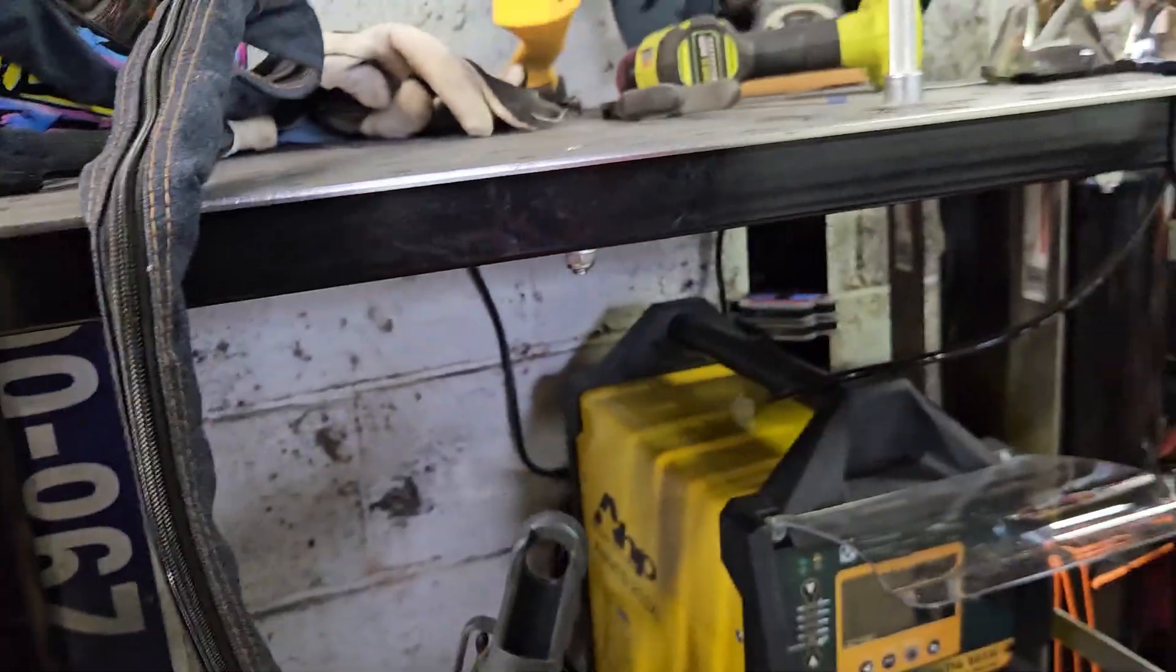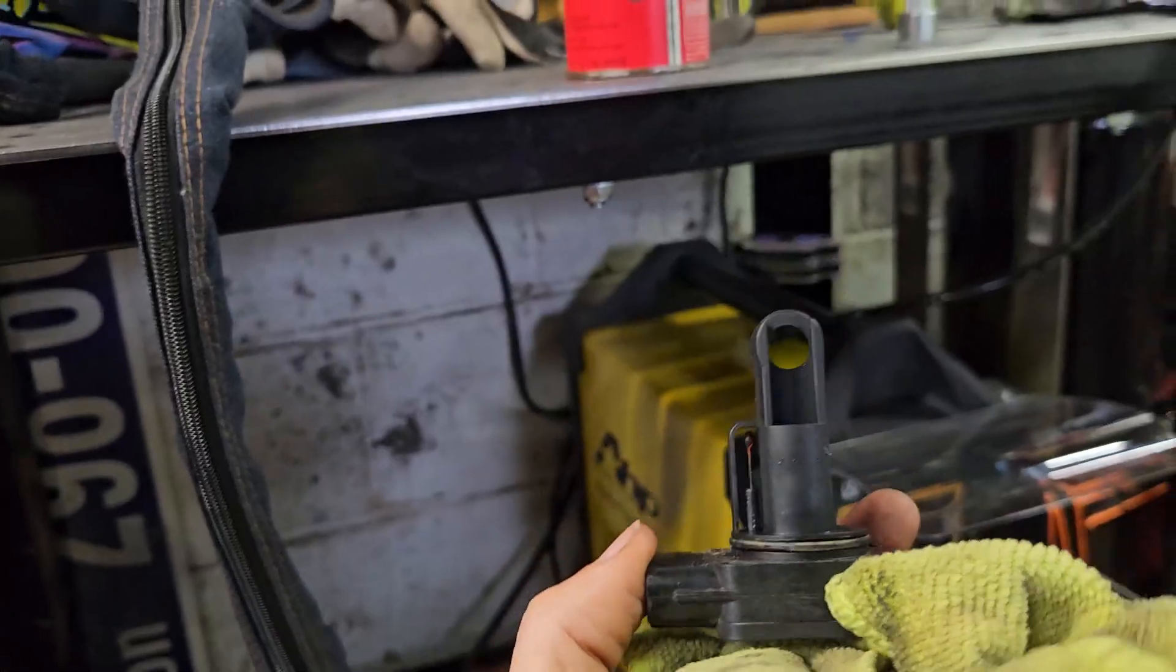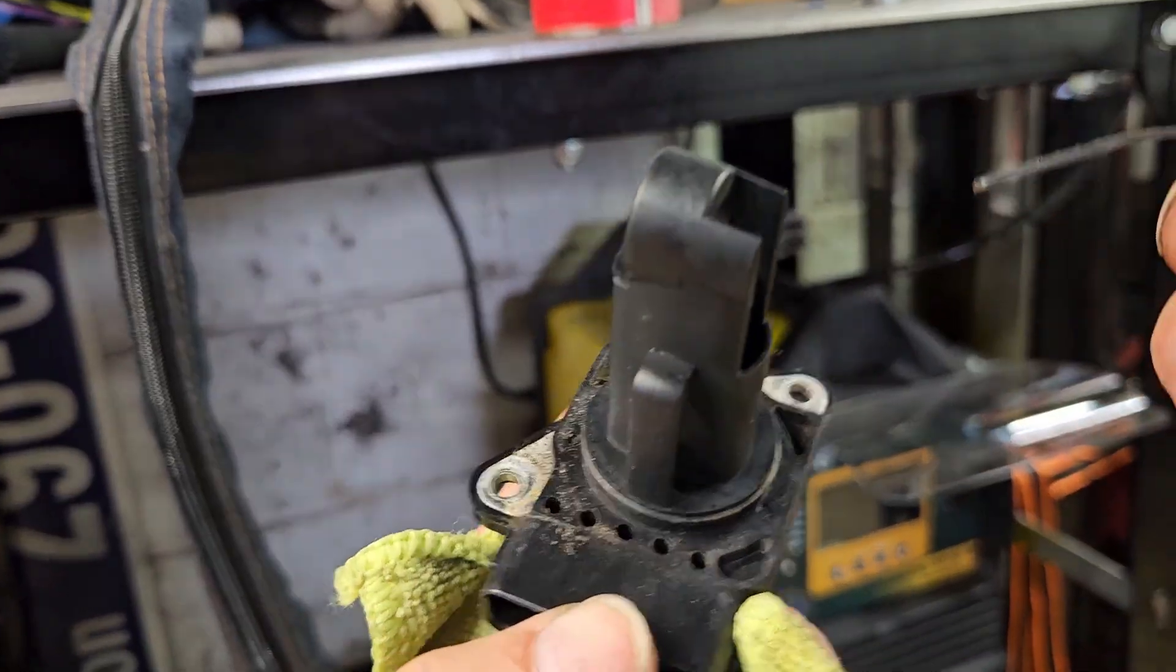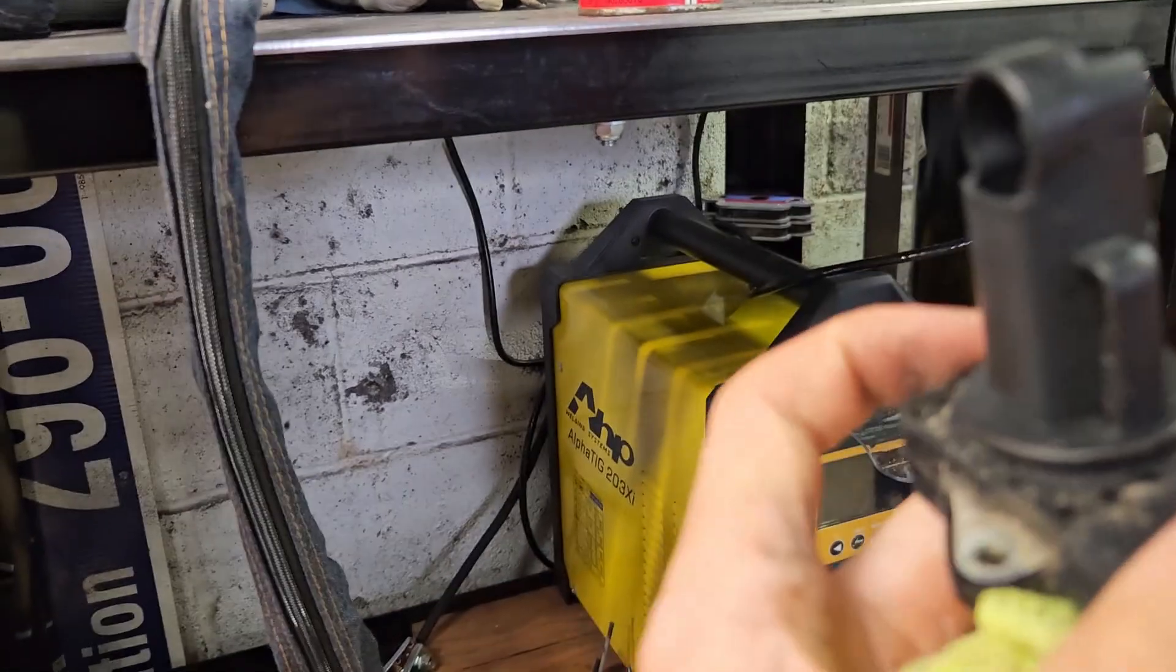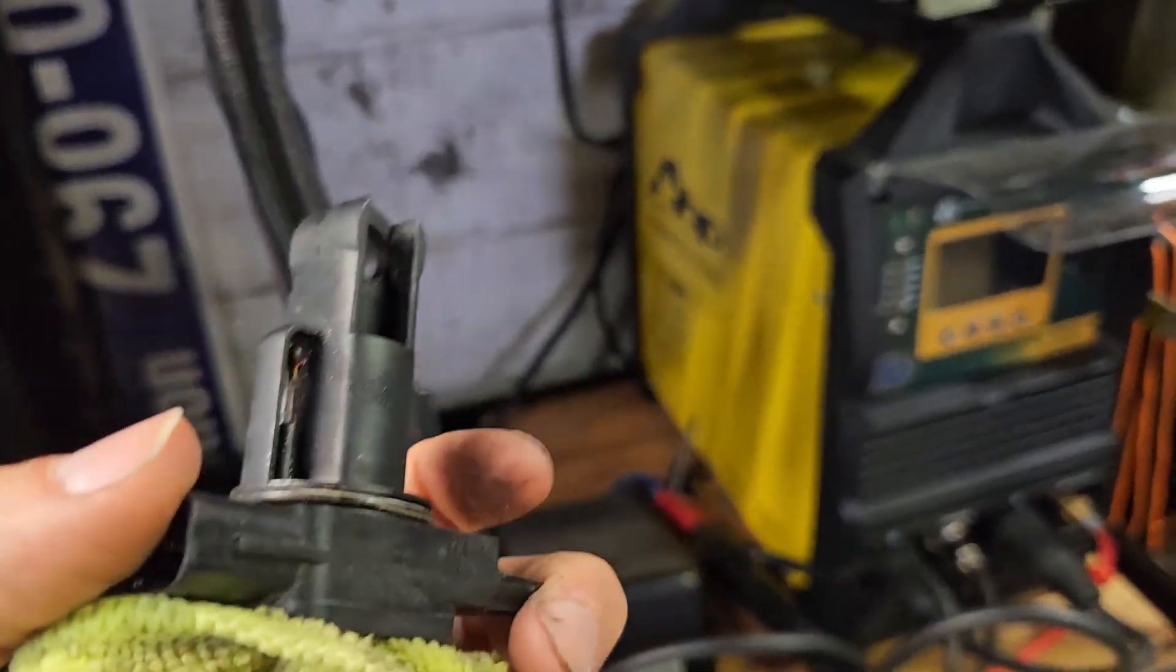So to clean it, I'm just spraying down in there with electric parts cleaner, and I'm going to very gently go in with a zip tie. I'm going to scrub that element. I'm being very gentle. If you're not careful, you will break that heating element.